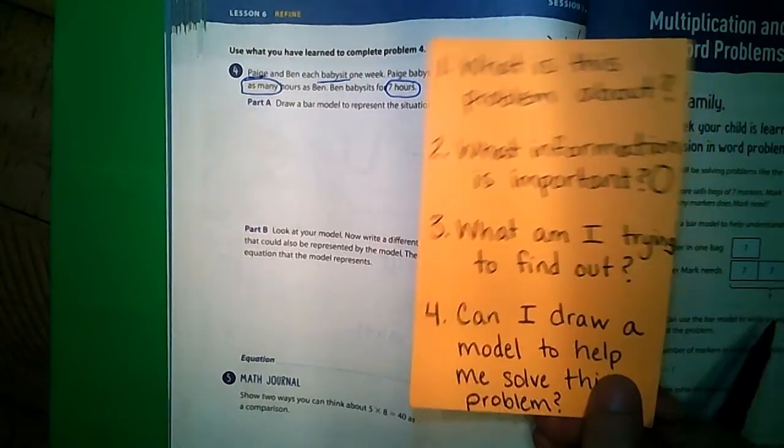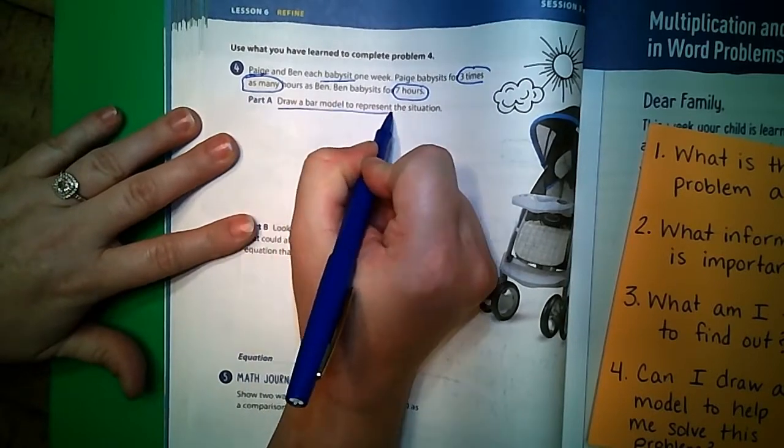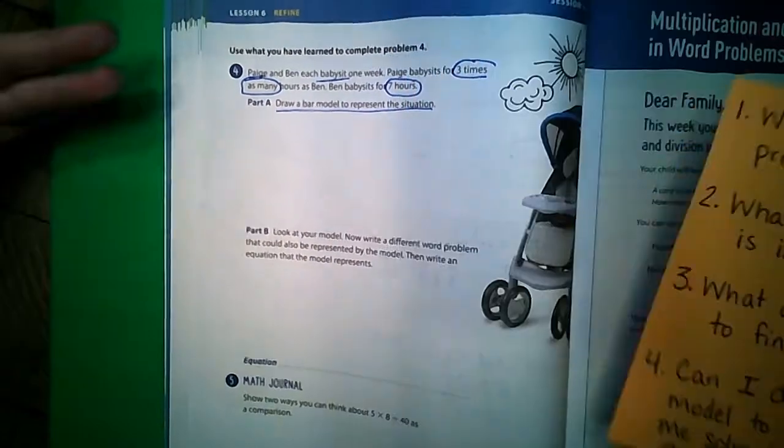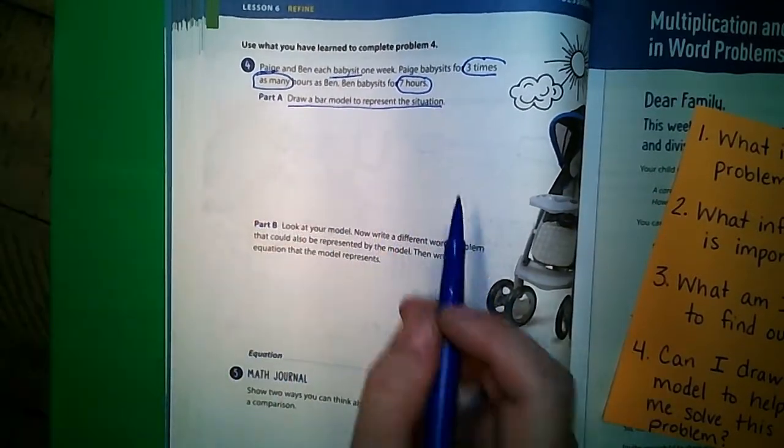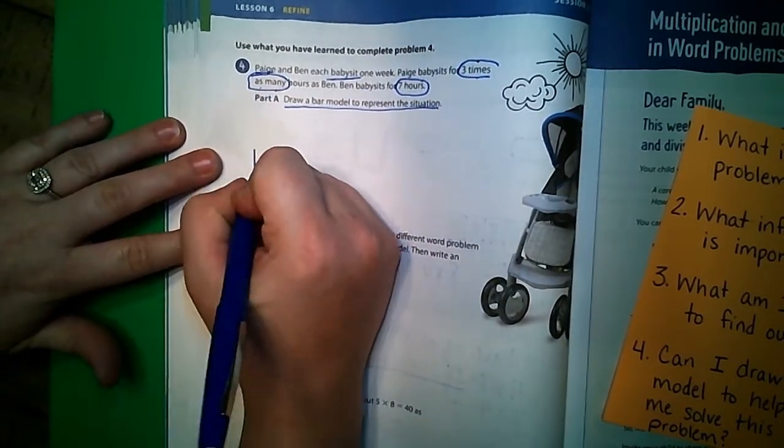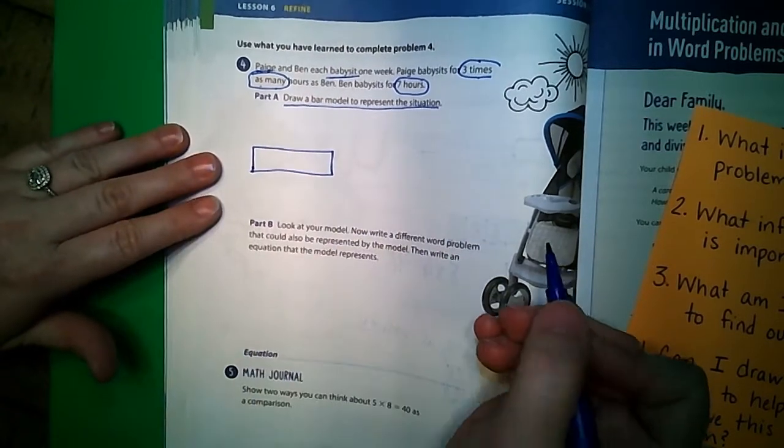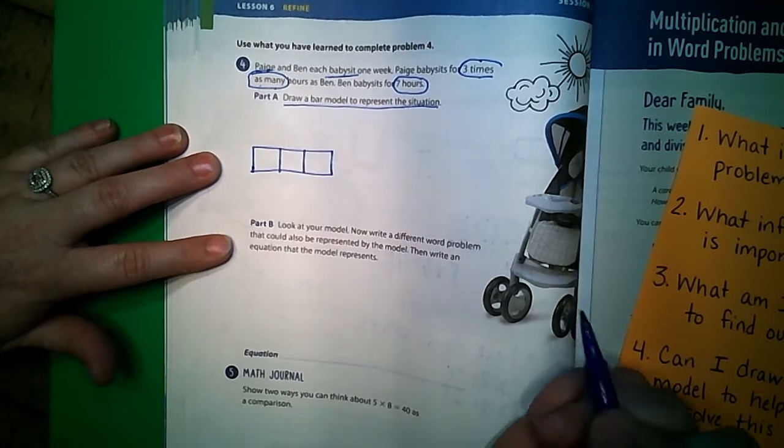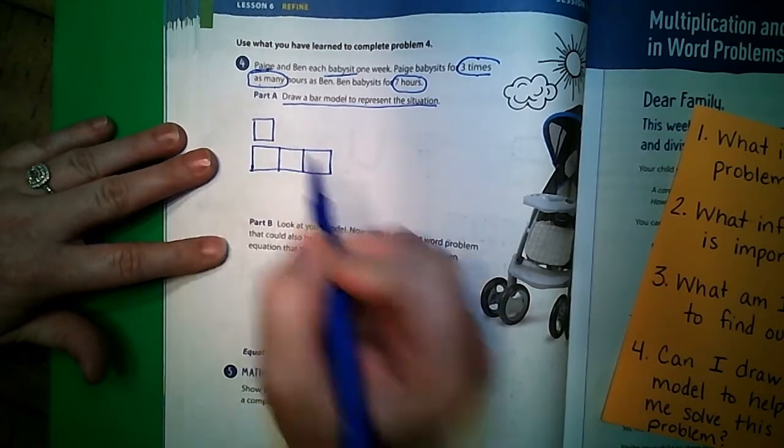What am I trying to find out? Well, on part A it wants us to draw a bar model to represent the situation. And our last one is can I draw a model, which it's telling us to draw the bar model. So remember, the number that has times as many is always going to be the one that is the longer bar, because it's telling us how many times we're going to do something. This says three times as many, so that means we're going to have a bar of three. And then the other one, the single, the one that represents what each of them represent, is the one that's by itself. So that is seven.